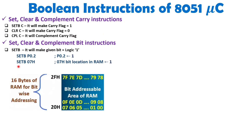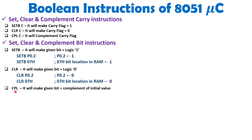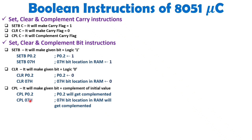128 bits are available as the bit-addressable area inside internal RAM, usable with these instructions. The CLR instruction clears a bit: CLR P0.2 makes that port pin equal to 0, and CLR 07h makes that bit inside internal RAM equal to 0. Similarly, the CPL instruction complements a bit: CPL P0.2 complements the given port pin — if it is 0 it becomes 1, and if it is 1 it becomes 0. Complement of a bit inside RAM can also be done with this instruction.